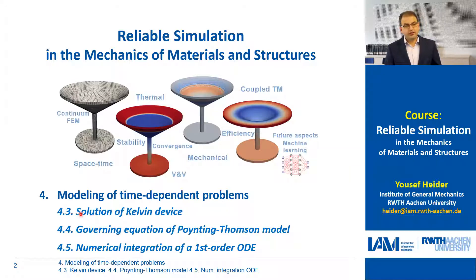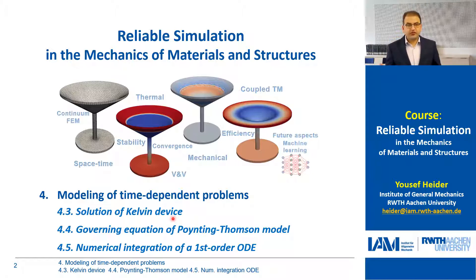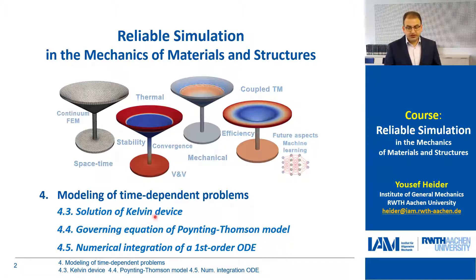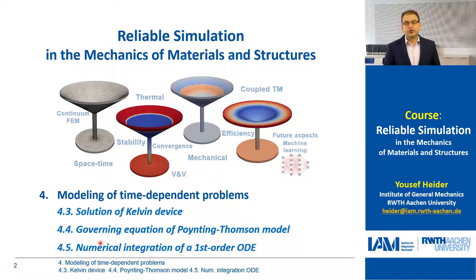Today we will continue with this, and we will address the Kelvin model, which consists of a spring and a dashpot in parallel, and this represents a typical solid material behavior when it's viscous. And then we will move to a more general model, which is the Poynting-Thompson model, which is a more general description of viscoelastic material behavior. This formulation will give us an ordinary differential equation, which will be a part of the last section on numerical integration of ordinary differential equations.